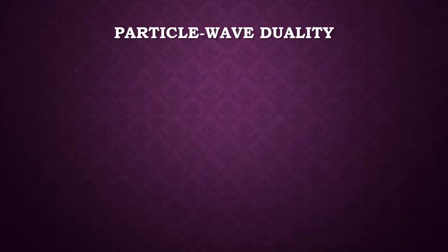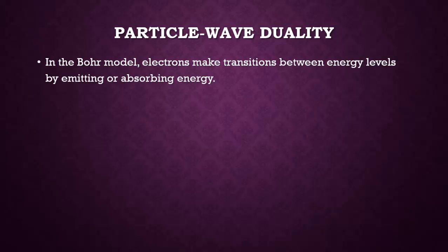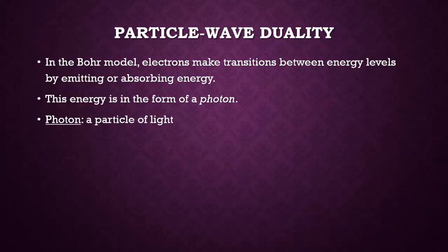Before we can go much further, we have to talk about particle-wave duality. This is where you should start taking notes. In the Bohr model, electrons make transitions between energy levels by emitting or absorbing energy. This energy is in the form of a photon, and a photon is a particle of light.